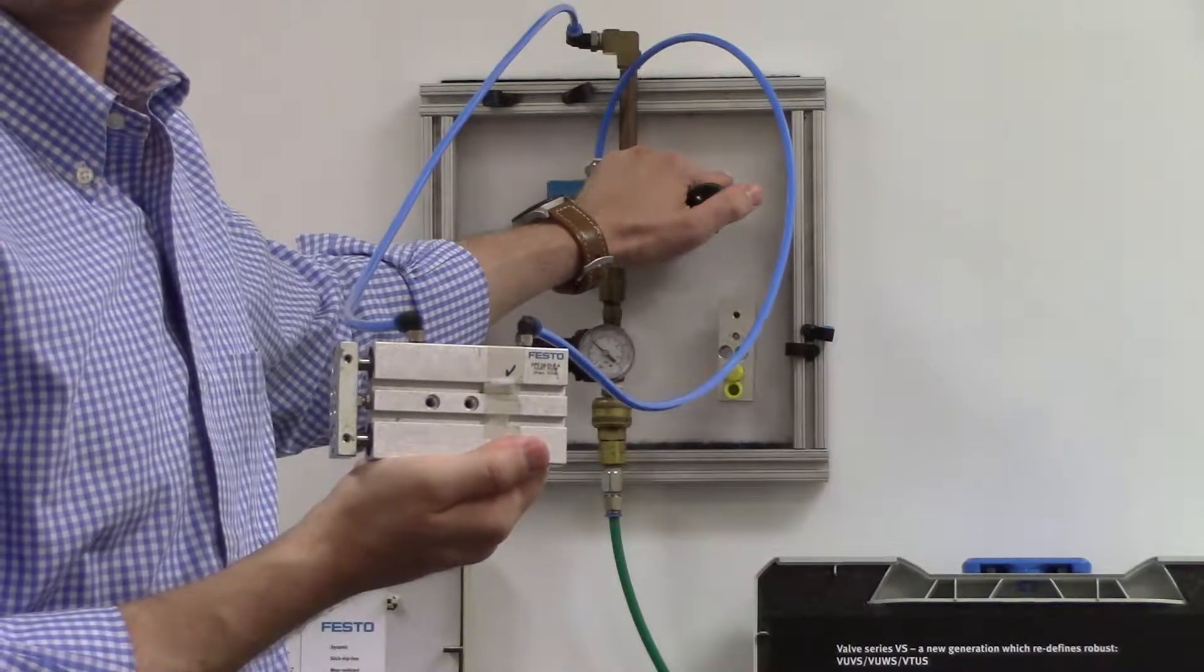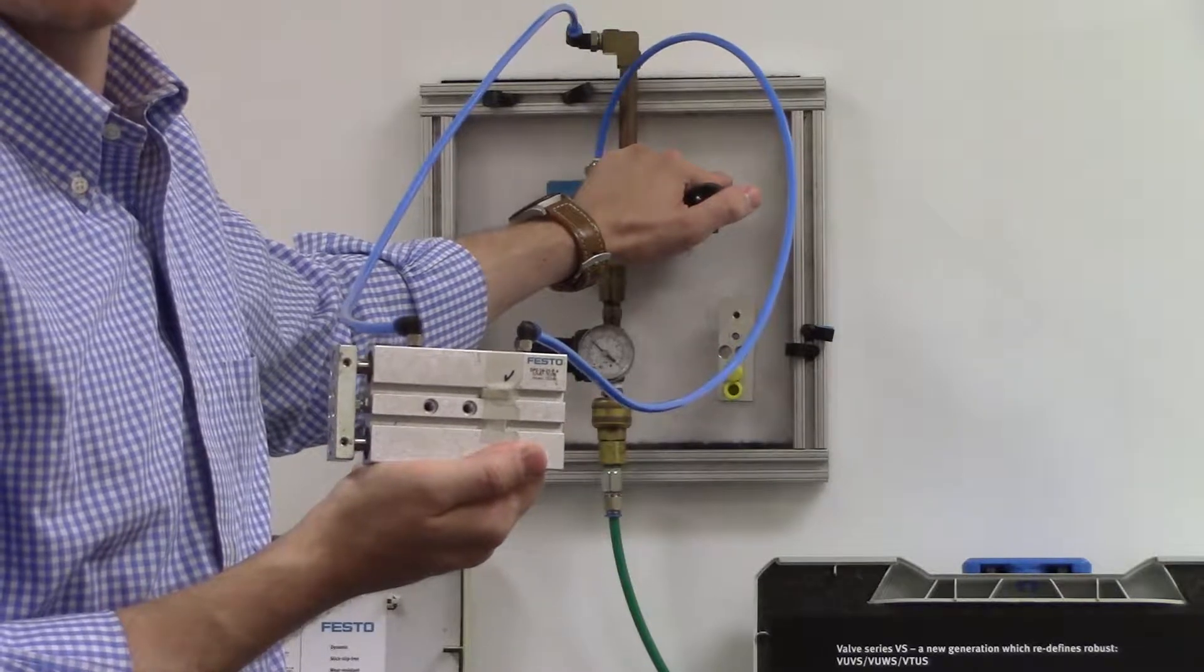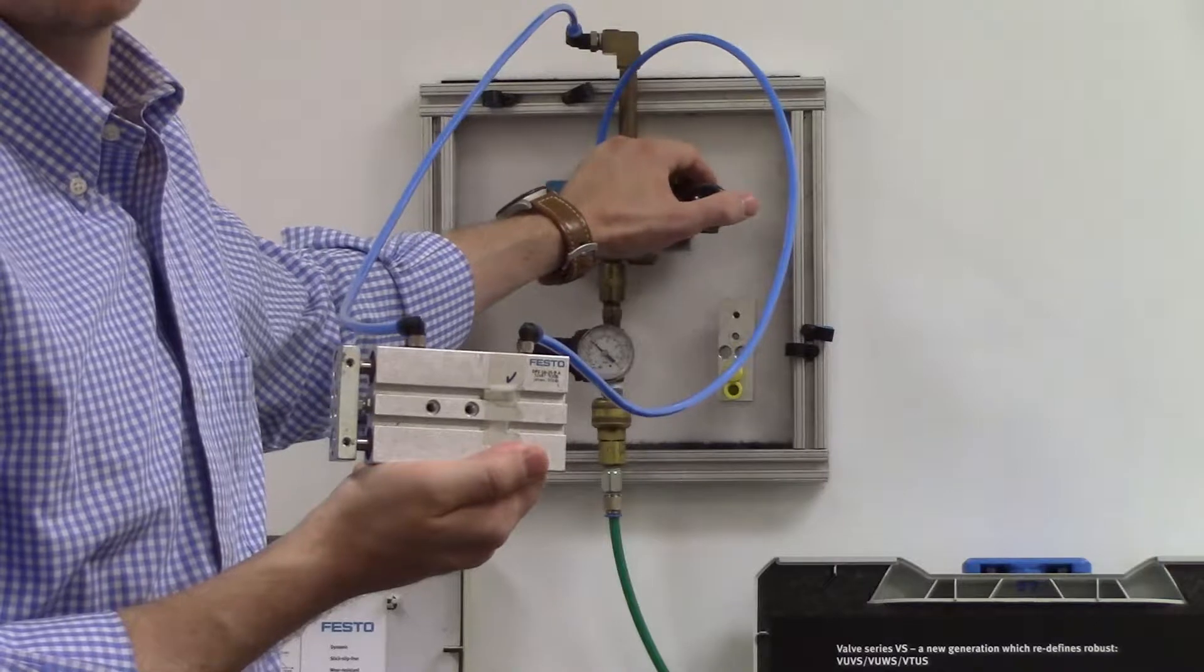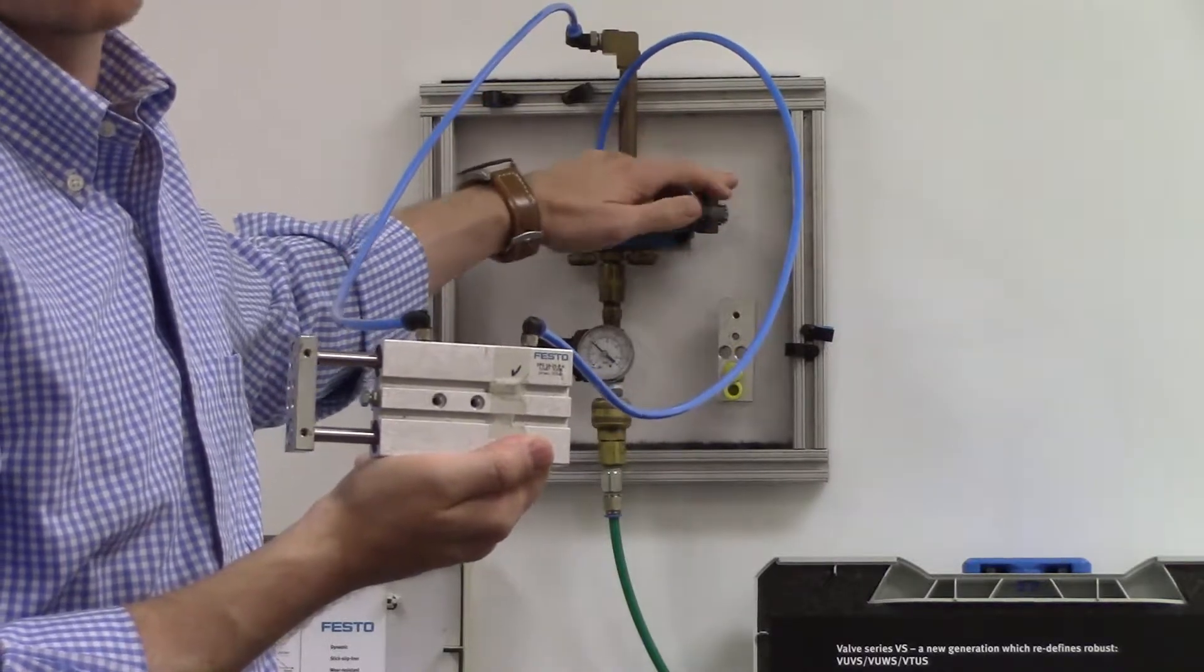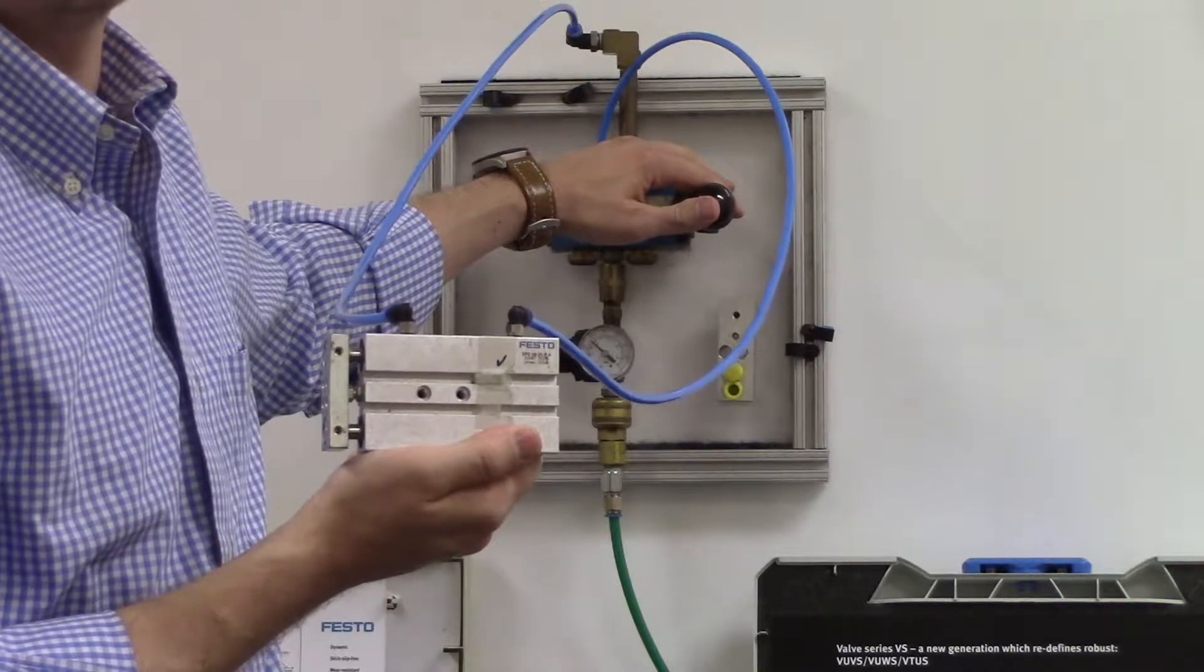A guided actuator like this one is designed to push a load over a short distance or to eject small work pieces. Like a double-acting cylinder, this guided actuator can be extended or retracted on demand. It comes with the added benefit of higher precision.